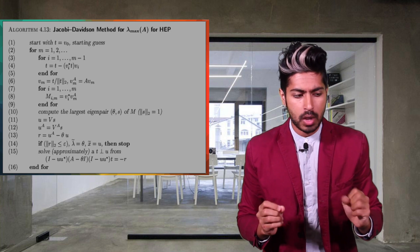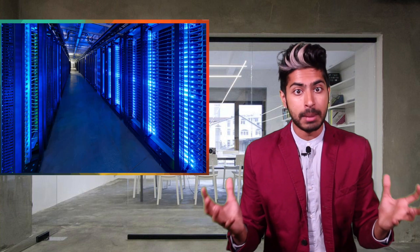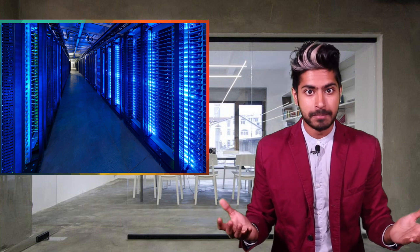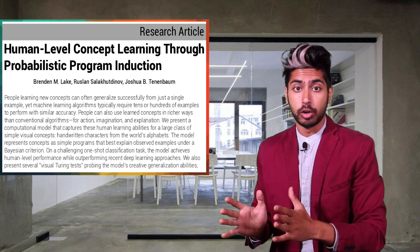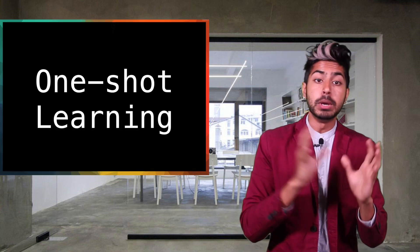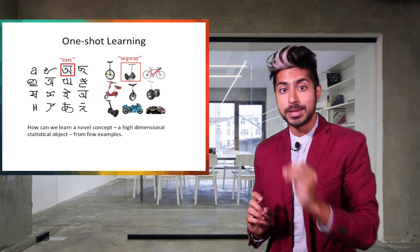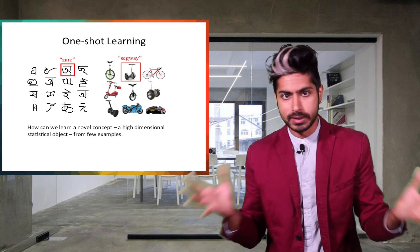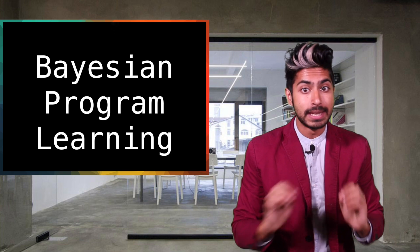If we could create an algorithm to learn concepts with few examples, wouldn't that be incredible? It would further democratize the field so that not just the big companies like Google and Amazon with huge private internal datasets are able to train their models, but anyone can. There was a recent paper called 'Human-Level Concept Learning Through Probabilistic Program Induction.' The authors set out to build a model capable of what's called One-Shot Learning — a type of ML that learns an object category after just one or a few examples.